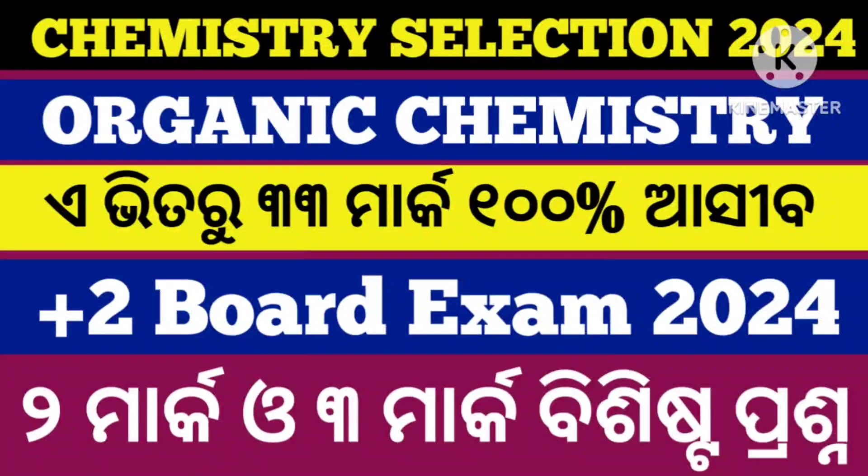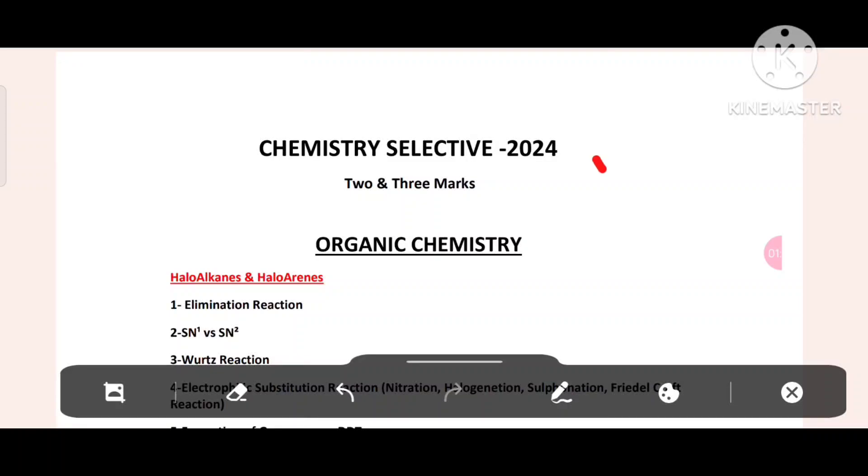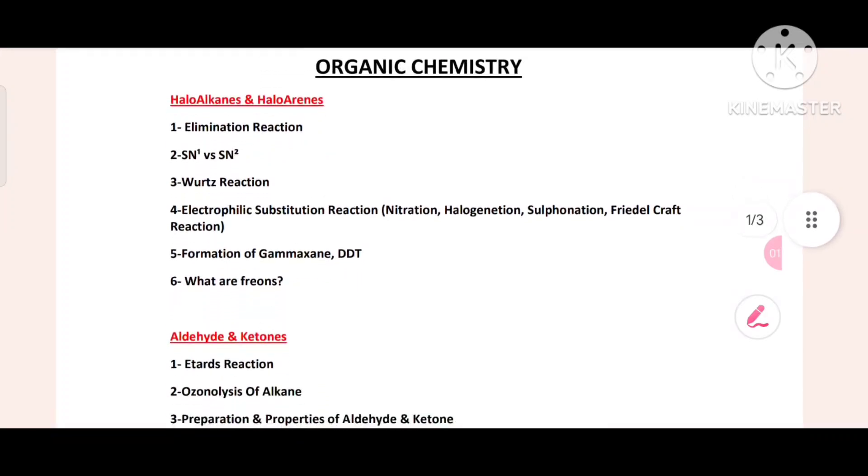Now, pen and paper ready. Okay, let's start. Look at this. Chemistry Selection 2024, 2 and 3 marks, Organic chemistry. Heading: Alkanes and Arenes.